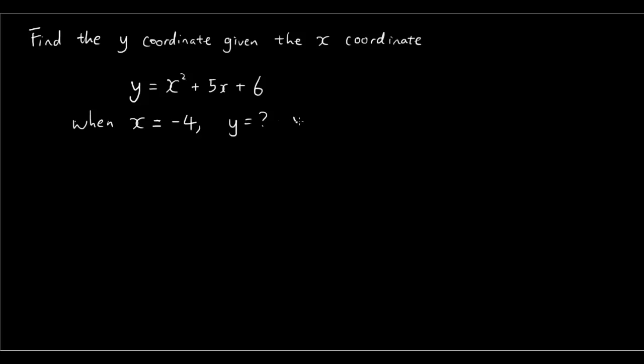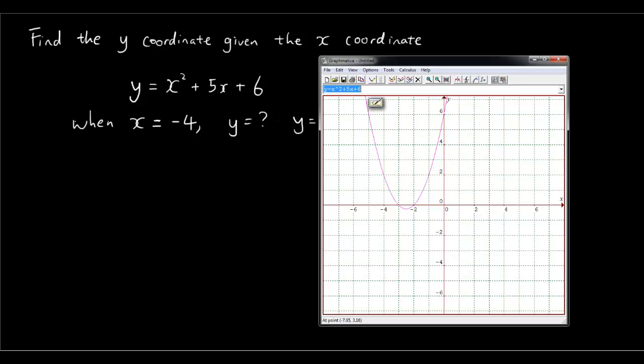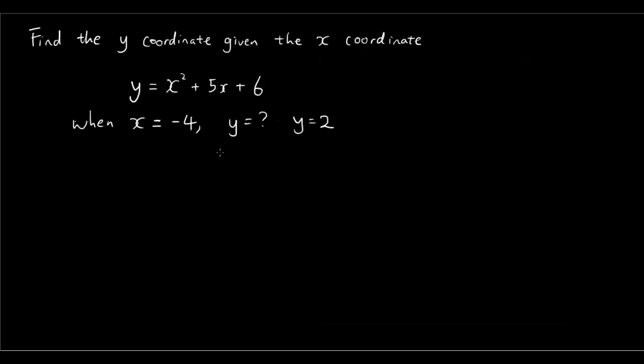So we can see that y is equal to 2 when x is equal to negative 4. So we can answer that question straight away from the graph. Y equals negative 4, sorry, y equals 2. Let me look at it again. Y equals 2. So it's very obvious when you have the graph in front of you.